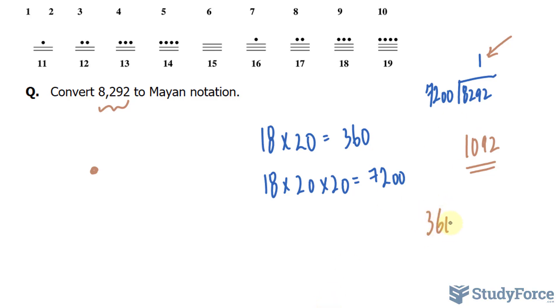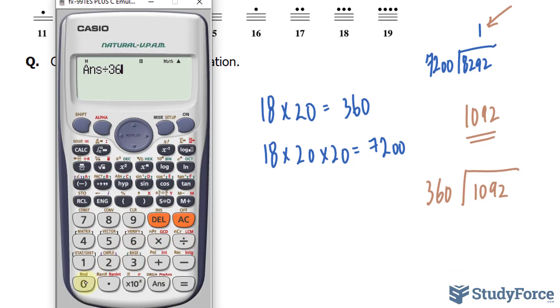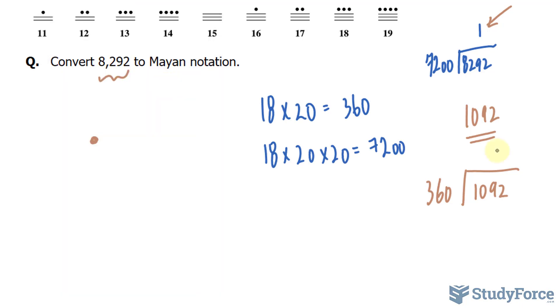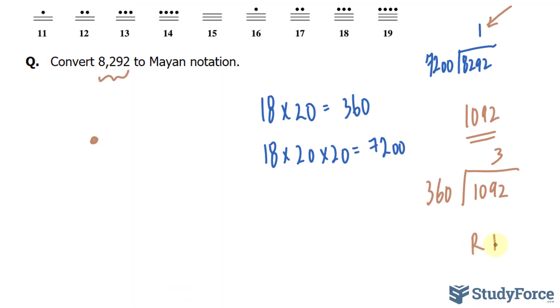360 divided into 1,092 gives us 3. It will divide 3 times comfortably. We'll have a remainder that we can work with. 3 times 360 equals 1,080. Subtract that from 1,092, that's a remainder of 12.